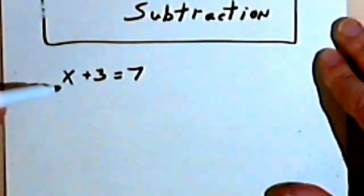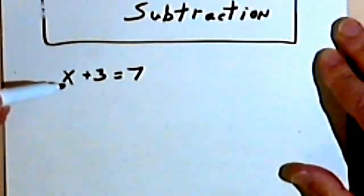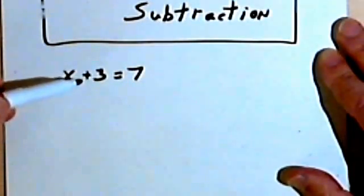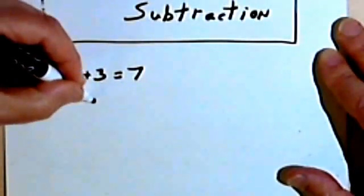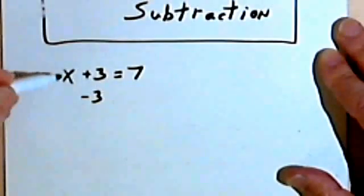Well, that means we want to get the x all by itself. A way to get the x by itself would be to subtract this 3, get the 3 away from here. So I'm going to subtract 3 from this side of the equation.